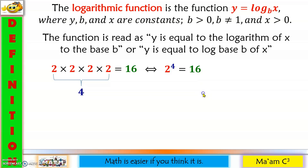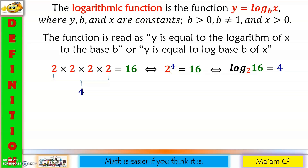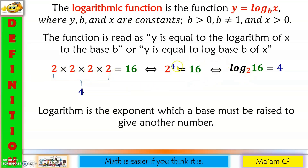This expression is also equivalent to: the logarithm of 16 to the base 2 is equal to 4. Notice that the answer, which is 4, is the exponent in exponential form. So it means the logarithm tells us what the exponent is — it answers the question: how many times the base is multiplied by itself. So, logarithm is the exponent to which a base must be raised to give another number.